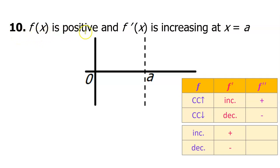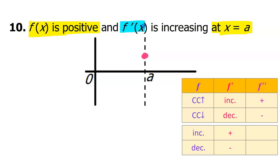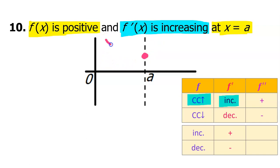Number ten says f of x is positive and f prime of x is increasing at x equals a. Let's start with the first part: f of x is positive at x equals a, so we just need to put a dot somewhere above the x-axis. But we also know that f prime is increasing at x equals a. Look at the chart: if f prime is increasing, that means the function itself is concave up. So I need to make sure that when I draw the function, I draw it as concave up.